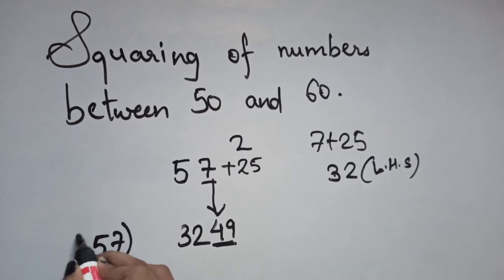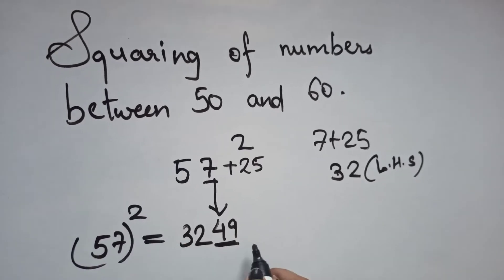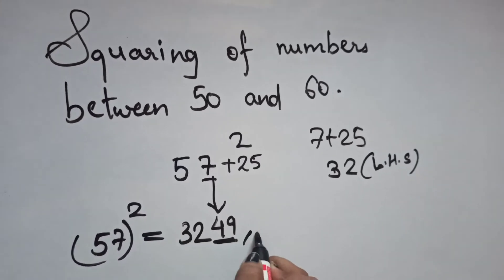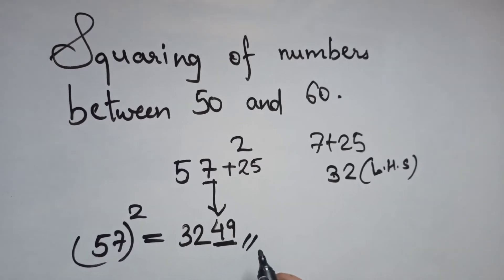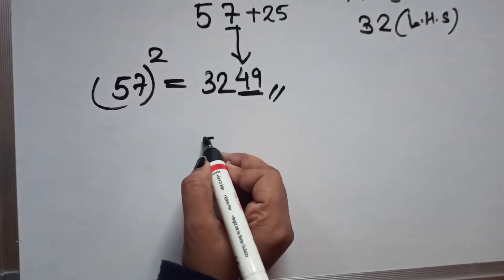So 57² = 3249. Let's try another example with 51.